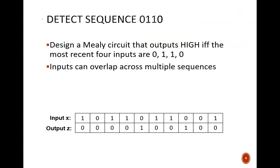Our given task is to design a Mealy circuit that outputs high if and only if the most recent four inputs are 0, 1, 1, 0. Multiple sequences are allowed to overlap.